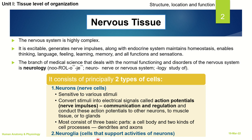The second type of cells are the neuroglia cells. These are the cells that support activities of the neurons. With further research and advancement, we now know that neuroglia have many more functions.